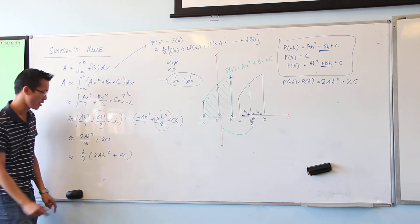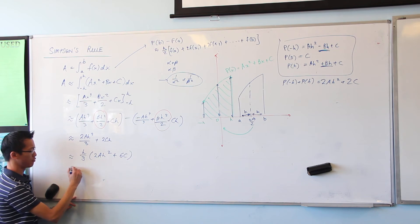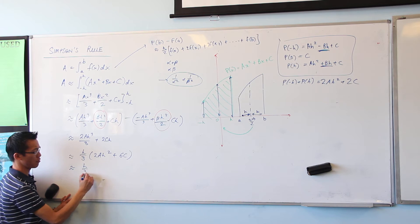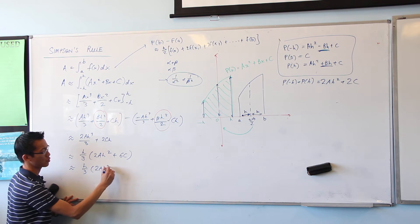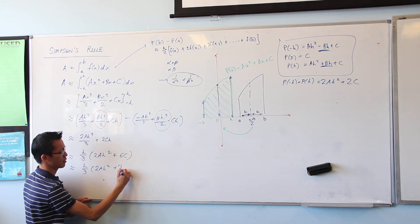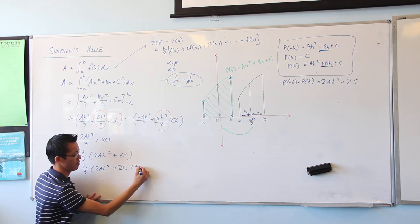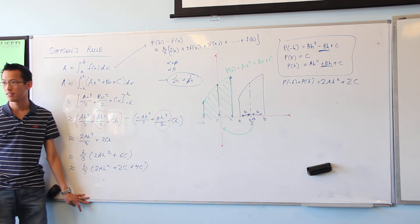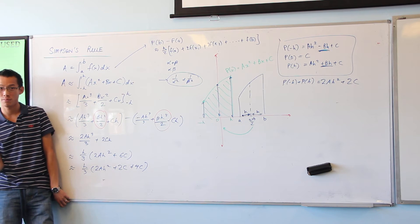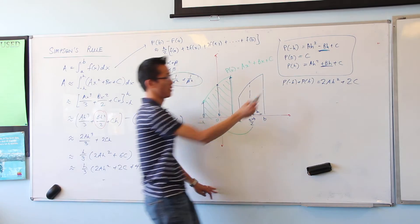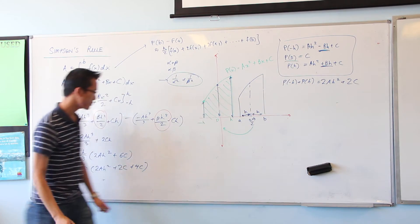That looks promising, doesn't it? It's pretty darn close, actually. If I rewrite this a little bit, we should be almost there. 2AH squared plus 2C. That's what I know, that's what I know. But I've got 6C here, right? So there's 4 hanging over on the end. But can you see where I get the 4 from? Where do I get the 4C from? It's just going to come from this guy, right?